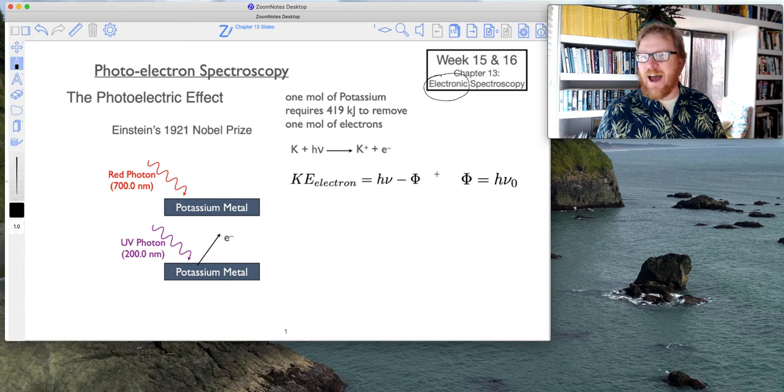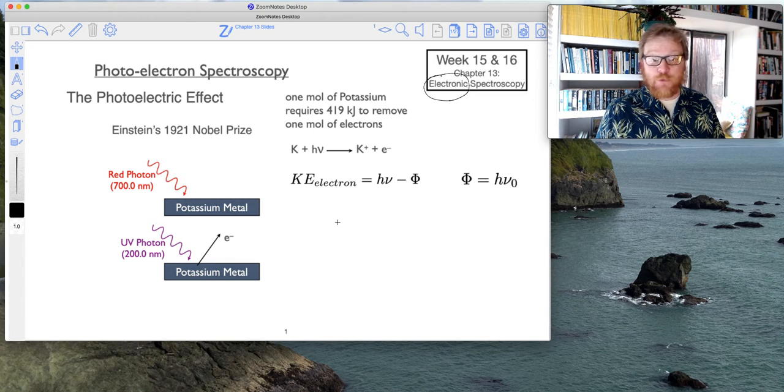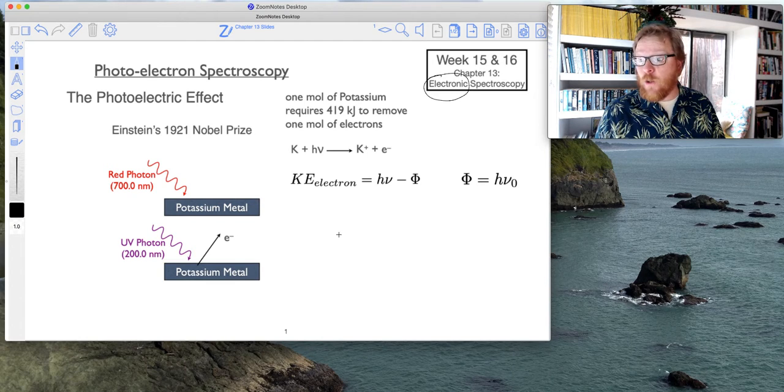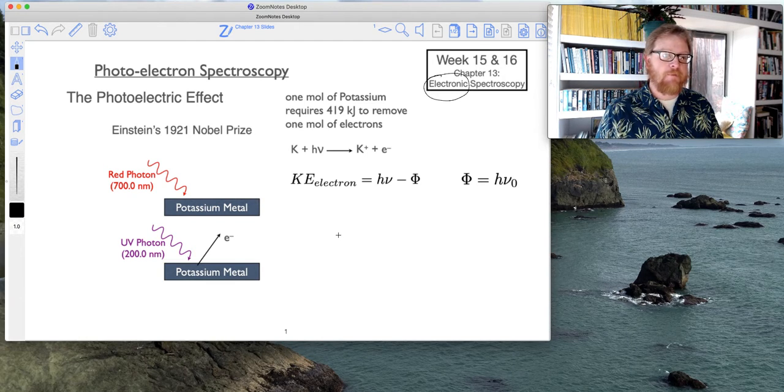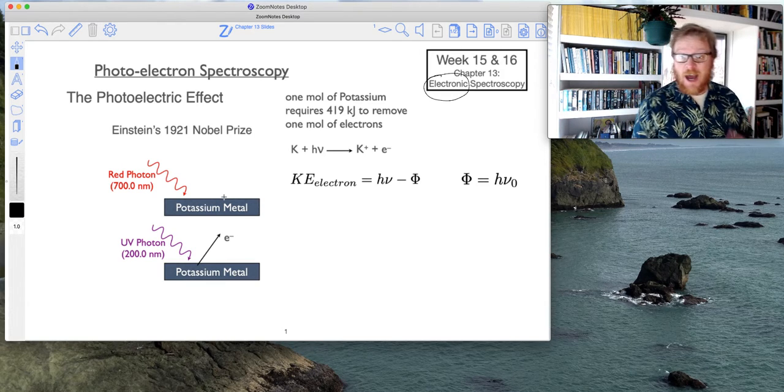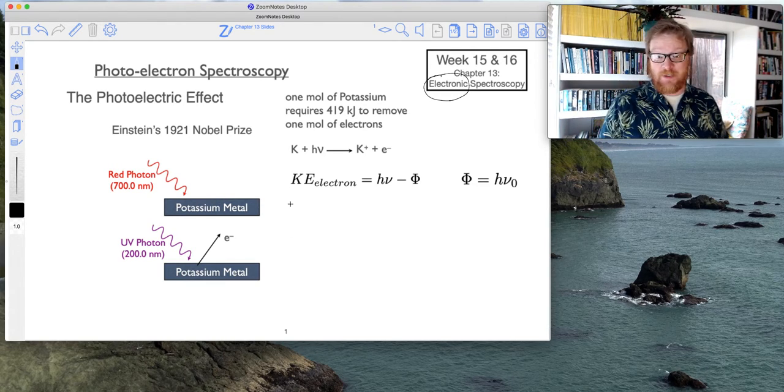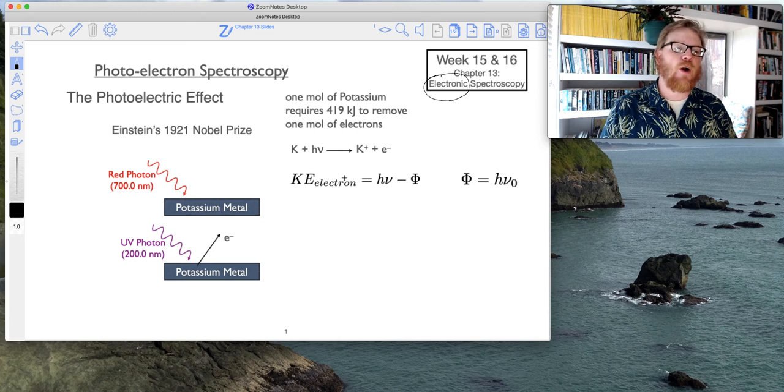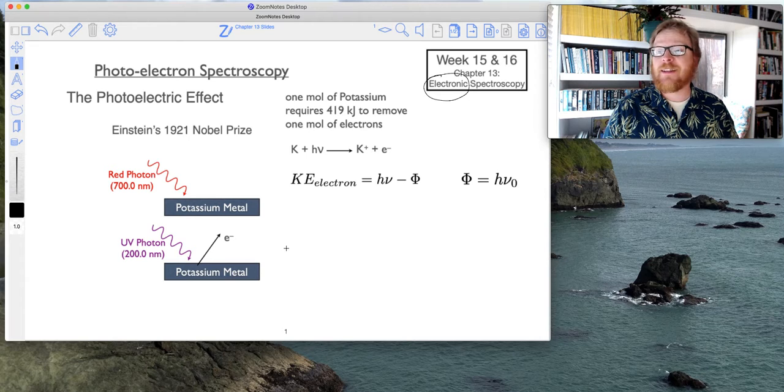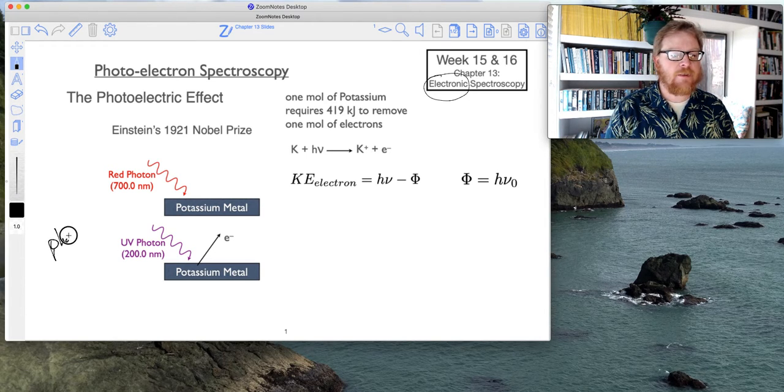So the first type of spectroscopy I want to introduce is photoelectron spectroscopy. This is based off of the photoelectric effect, one of the very first things we talked about this semester. If you recall, the photoelectric effect is based on this notion that we can use light to photoionize a sample.